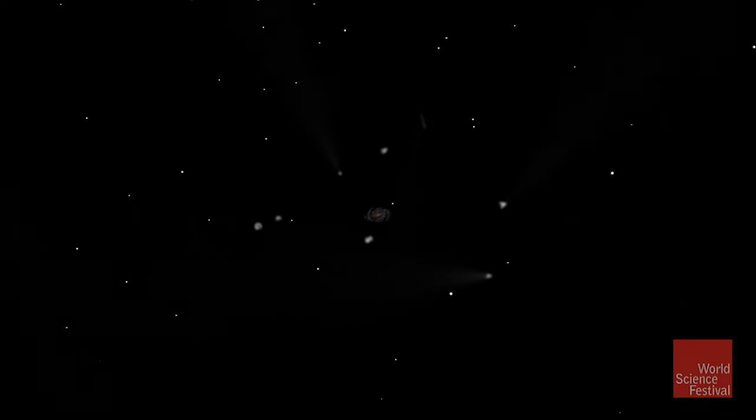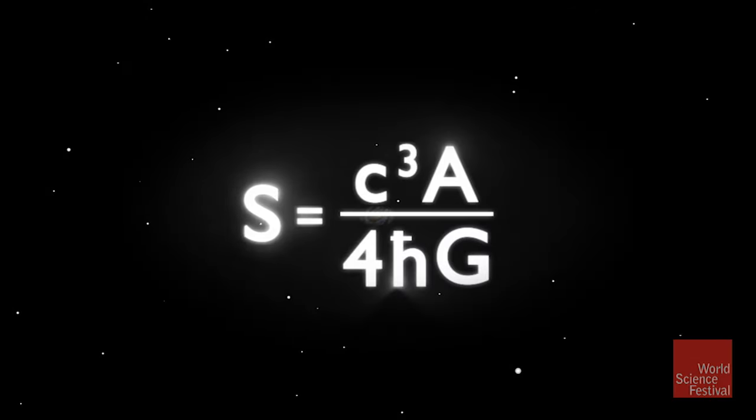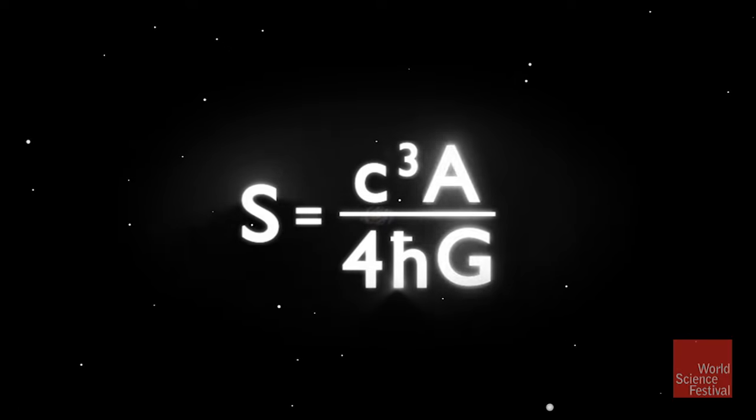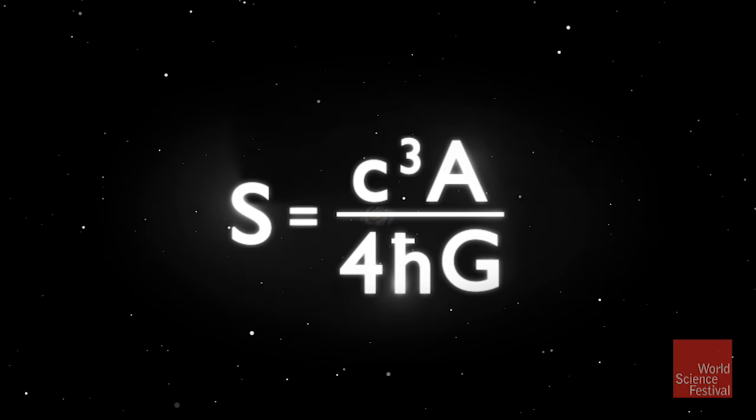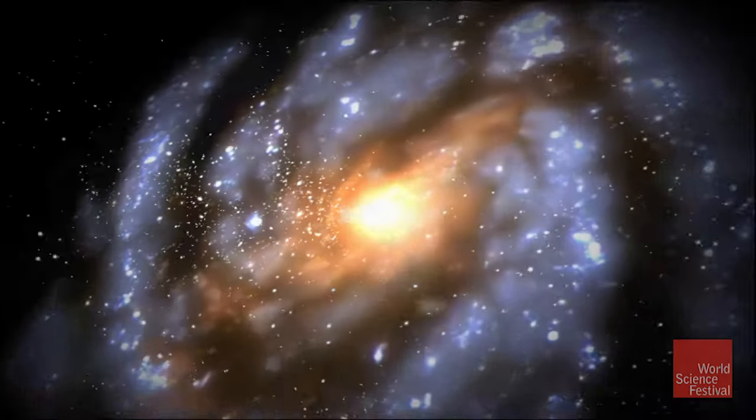Back in the early 1970s, Stephen Hawking wrote down an astonishing equation. It would include relativity, it would include quantum mechanics, and it would include information. Hawking's rather simple equation brought us a step closer to understanding the relationship of quantum physics and black holes.